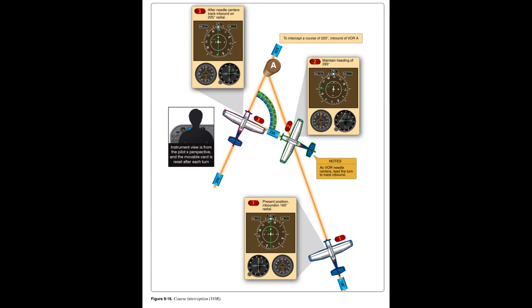VOR Operational Errors. Typical pilot-induced errors include: 1. Careless tuning and identification of station. 2. Failure to check receiver for accuracy/sensitivity. 3. Turning in the wrong direction during an orientation — this error is common until visualizing position rather than heading. 4. Failure to check the ambiguity (TO/FROM) indicator, particularly during course reversals, resulting in reverse sensing and corrections in the wrong direction.